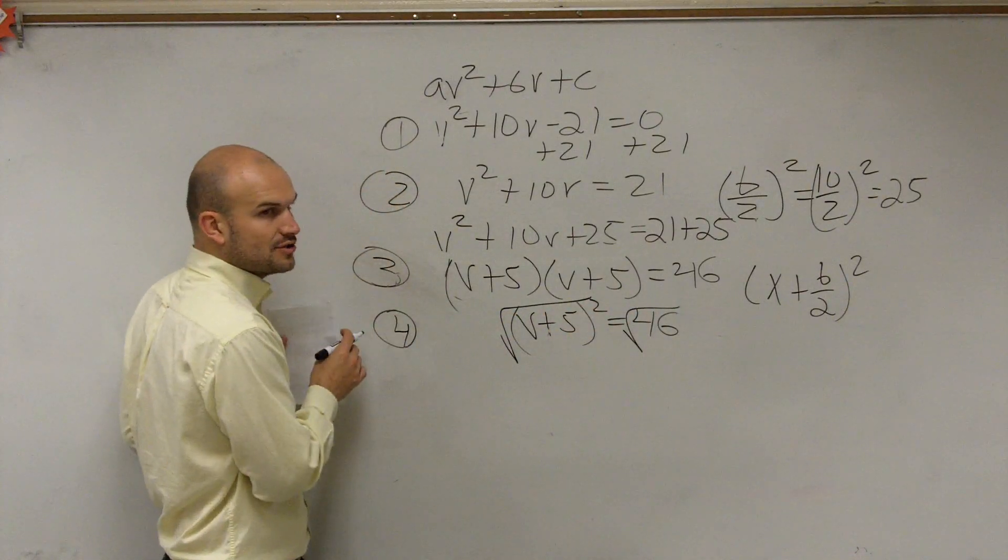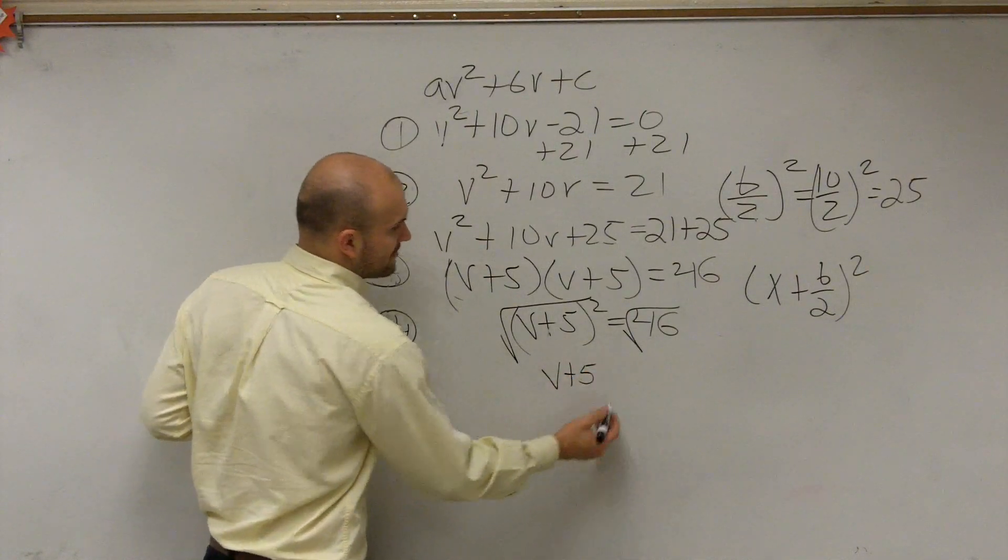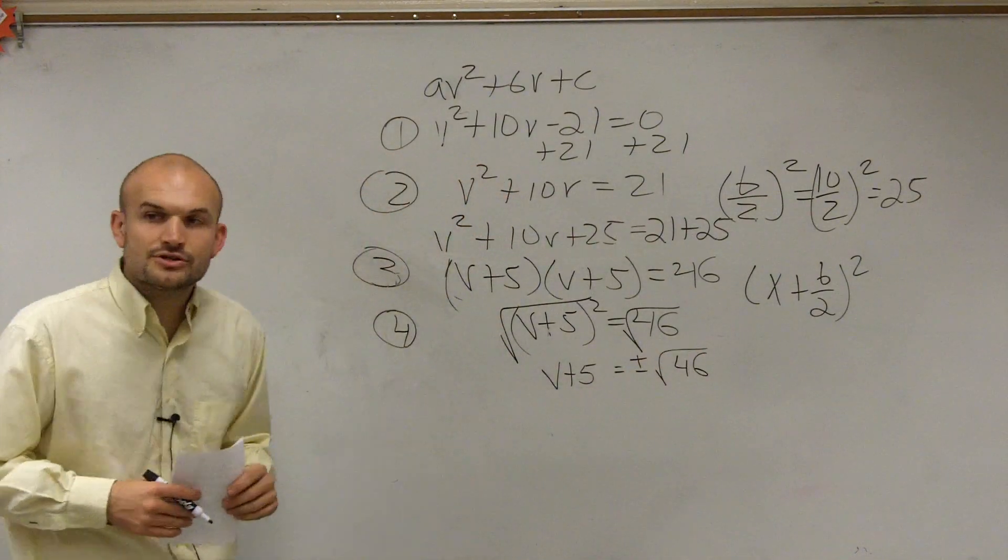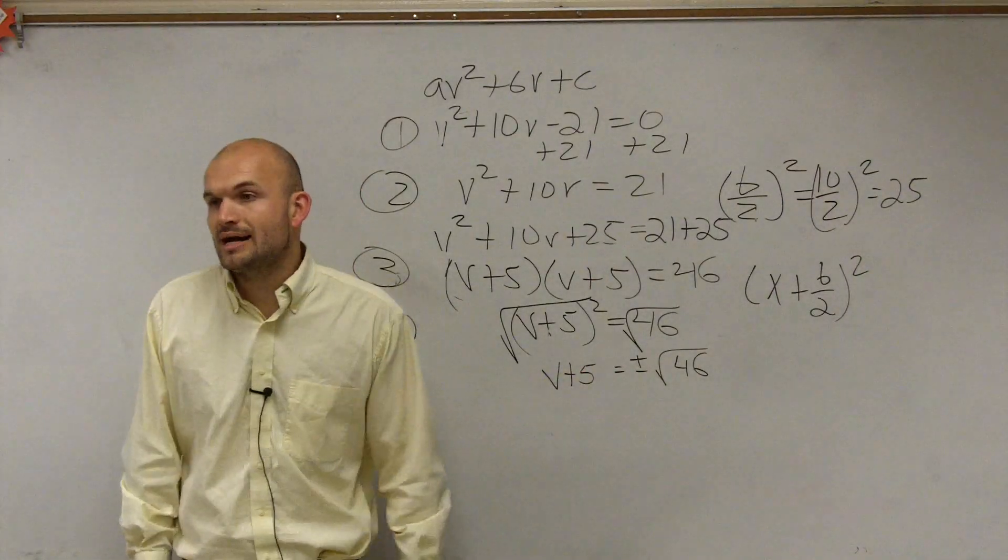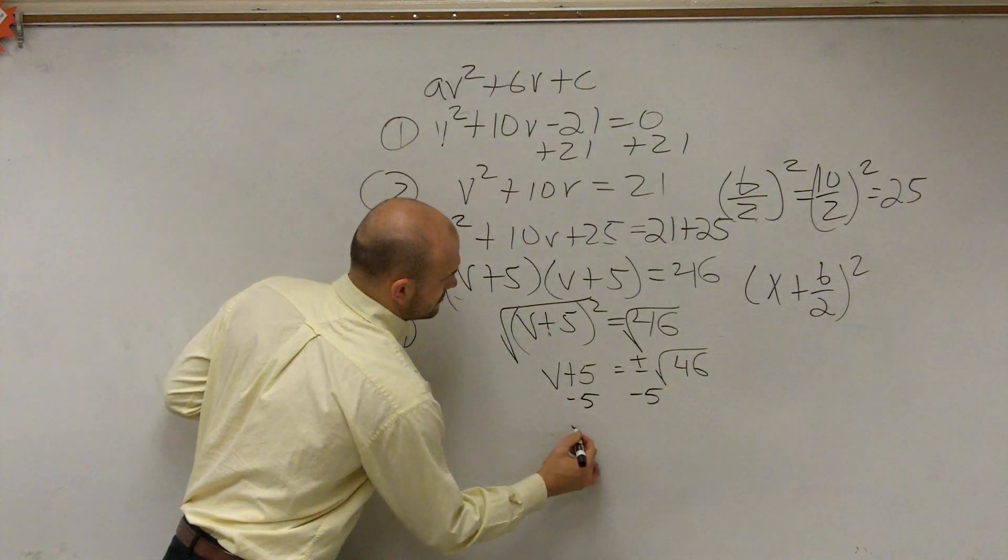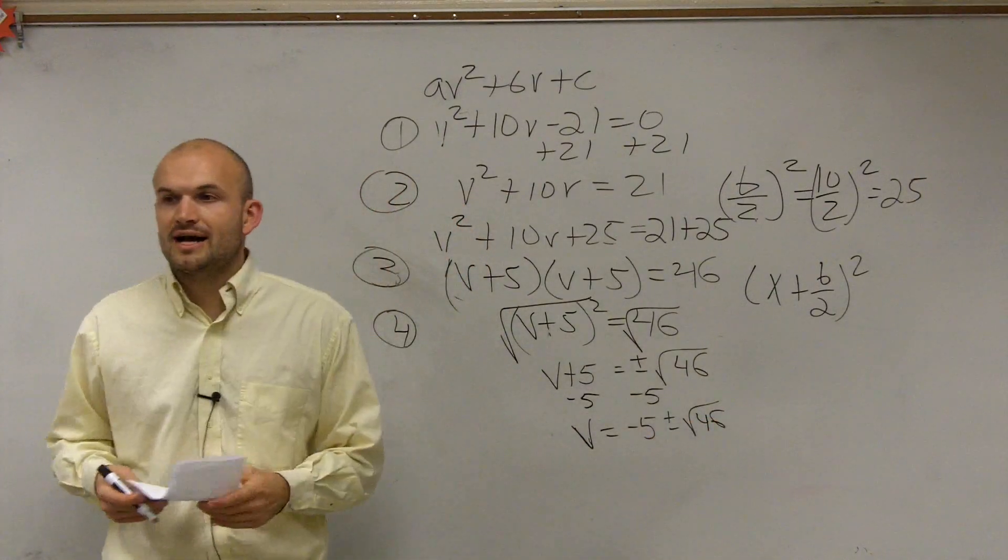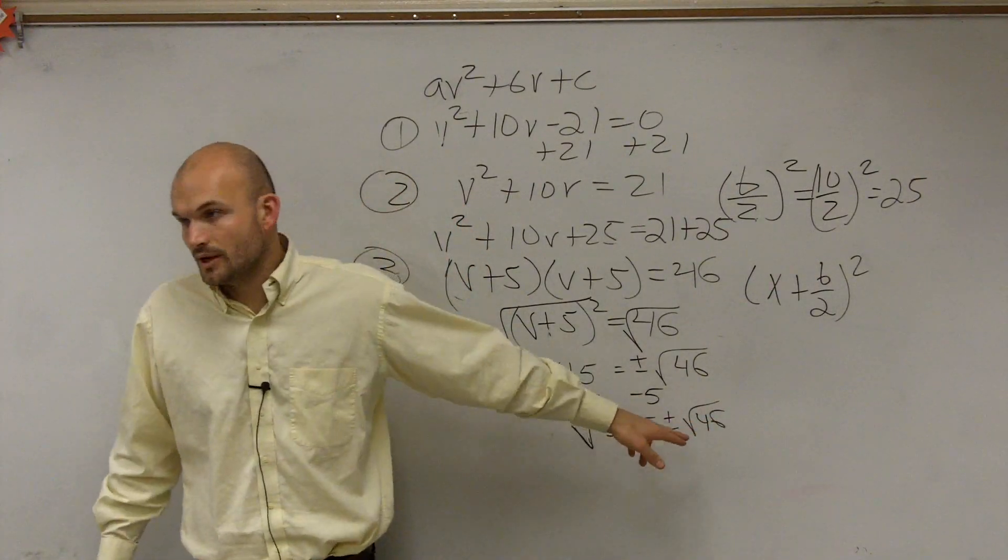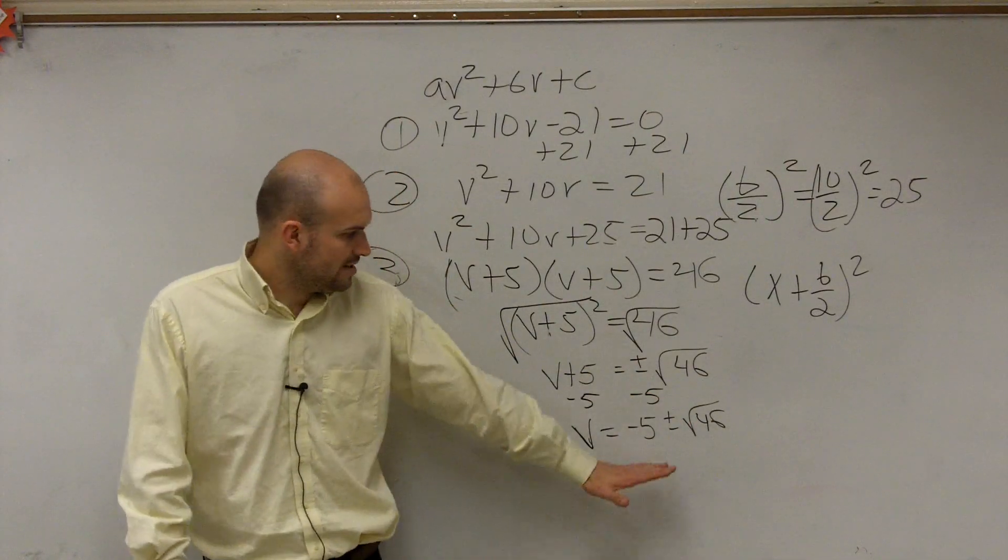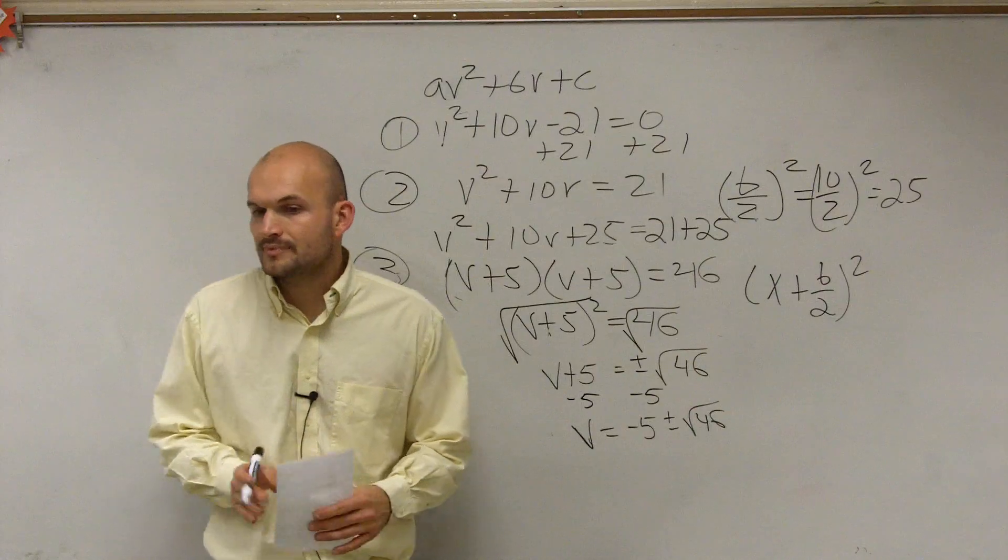So our last step, number 4, is to solve by using inverse operations. So I have v + 5 = ± √46. Whenever you introduce the square root, you need to make sure you include plus or minus. Then I subtract 5. v = -5 ± √46. And if you can simplify your radical, then you will. But in this problem, I'm not seeing a way that we can simplify this radical. So that is going to be our final answer. v = -5 ± √46.